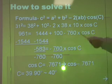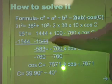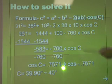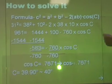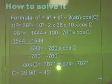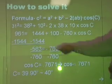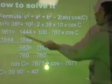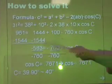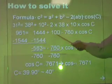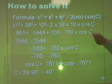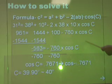So first you plug in the numbers into the formula. So it is 31 squared equals 38 squared plus 10 squared minus 2 times 38 times 10 times cosine C. So you add them up. 31 squared equals 961, 38 squared equals 1,444, 10 squared equals 100, 2 times 38 times 10 equals 760, then you put down cosine C.